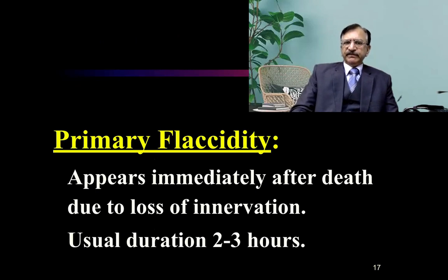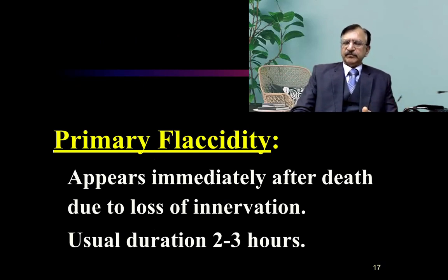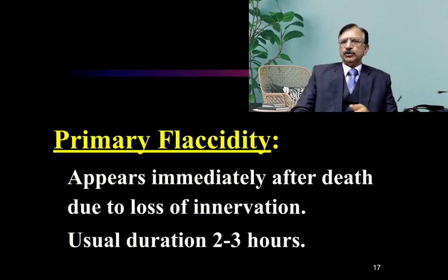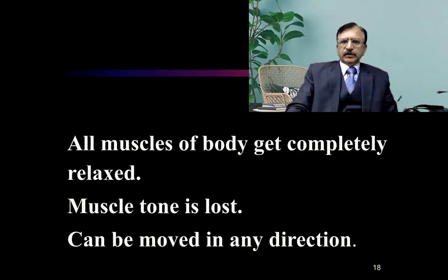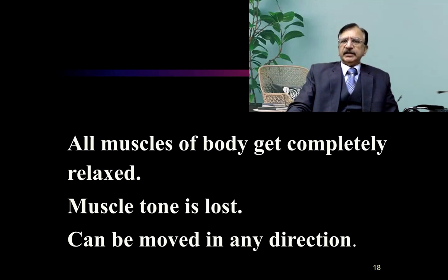For primary flaccidity — it appears immediately after death, at the moment of death, due to loss of innervation. This flaccidity usually lasts for two to three hours. All the muscles of the body get completely relaxed, the muscle tone is lost, and body limbs can be moved in any direction.